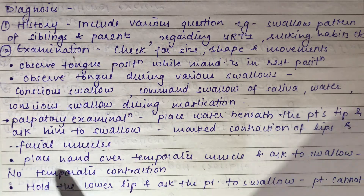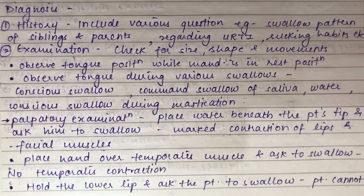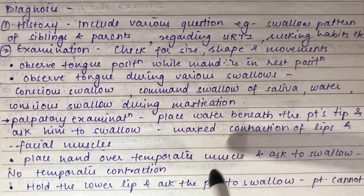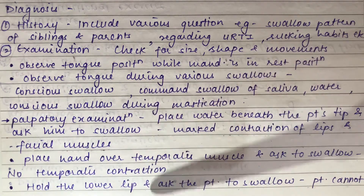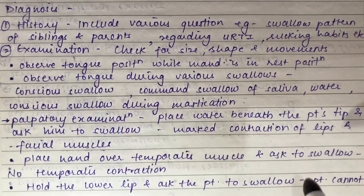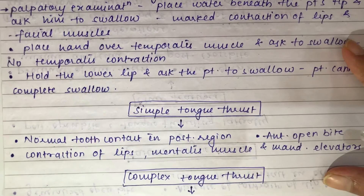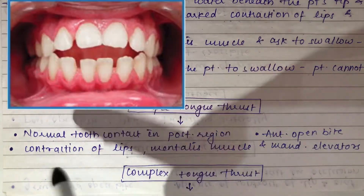Placing a hand over the temporalis muscle and asking the patient to swallow: there is no temporalis contraction in cases of tongue thrusting. Holding the lower lip and asking the patient to swallow: the patient cannot complete the swallow, indicating a tongue thrusting habit.